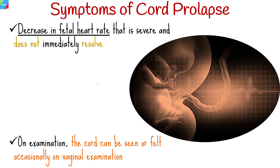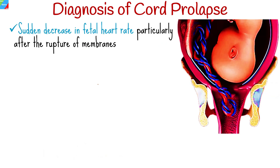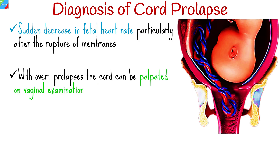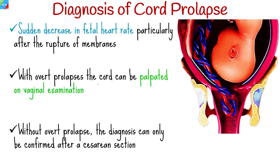The diagnosis of cord prolapse can be made by careful history taking and physical examination. Expected findings include a sudden decrease in fetal heart rate, particularly after rupture of membranes. With overt prolapse, the diagnosis can be confirmed if the cord is palpated on vaginal examination. Without overt prolapse, confirmation can only be made after a cesarean section.